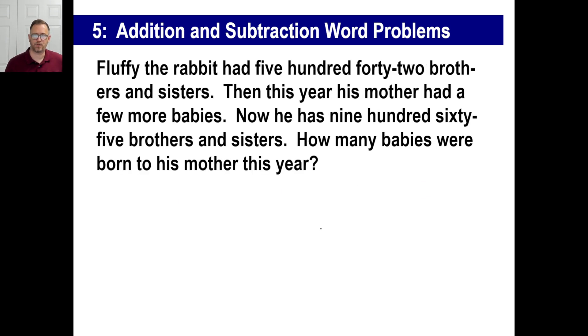Let's try one more. Fluffy the rabbit had 542 brothers and sisters. Then this year, his mother had a few more babies, like the Duggars. Now he has 965 brothers and sisters. How many babies were born to his mother this year? In other words, he has 542, his mother had some more, now he has 965. What operation are you going to have to do to figure out what this number is using the 542 and the 965?